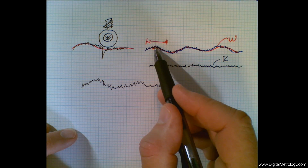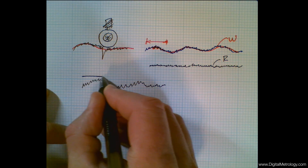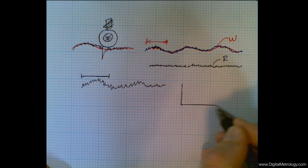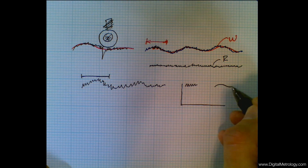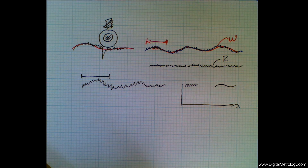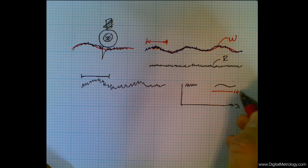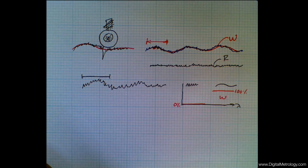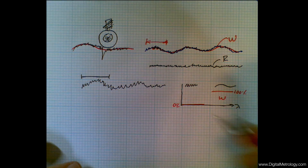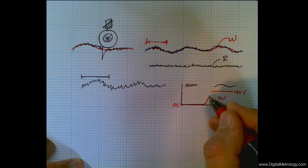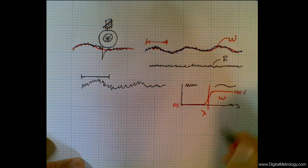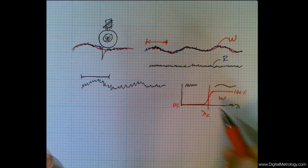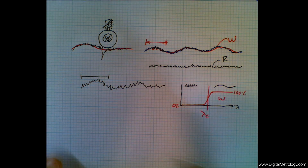We want to average to get to the waviness, and then we can take the waviness away. The goal is to separate short wavelengths from long wavelengths. Waviness should contain 100% of the long wavelengths and 0% of the short ones. In reality we can't be perfect — the best we can do is a filter where 50% gets through at our cutoff wavelength, which might be 0.8 millimeters or 30 thousandths of an inch. The sharpest filter we can create mathematically to achieve this is called the Gaussian filter.